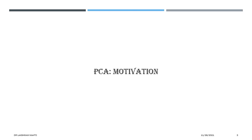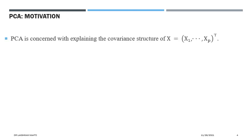The motivation for studying PCA is interesting from several perspectives. PCA is concerned with explaining the covariance structure of a random vector, which is a representative of a data point. We explore this covariance structure through a linear combination of the variables — the variability in a random vector is explained through its covariance structure.